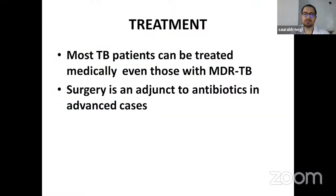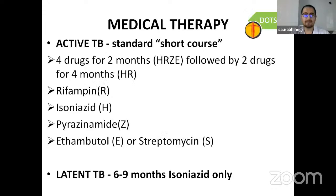In the treatment section, most TB patients can be treated medically, even those with MDR-TB. Surgery is adjunct to antibiotics in advanced cases. Medical therapy for active TB: a standard short course of four drugs for two months, followed by two drugs for four months. First-line drugs include rifampicin, isoniazid, pyrazinamide, ethambutol, or streptomycin. For latent infections, six to nine months of isoniazid only is required.